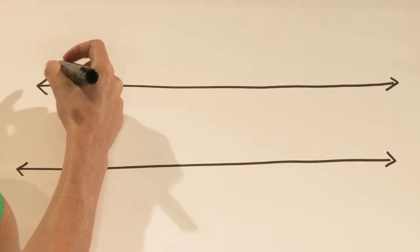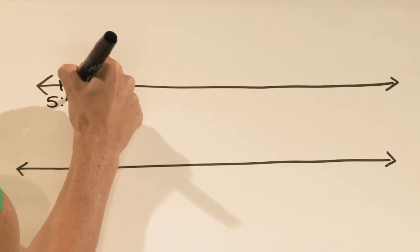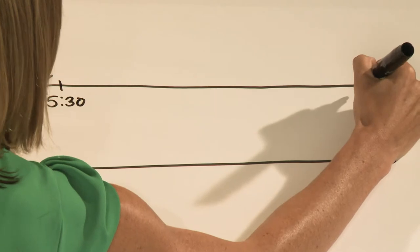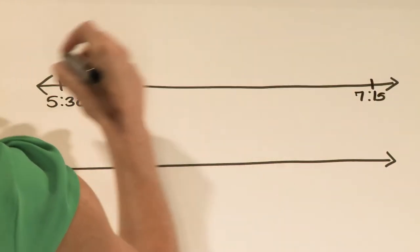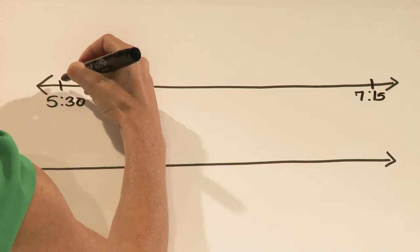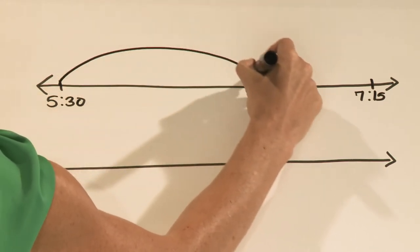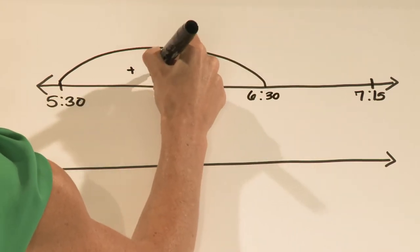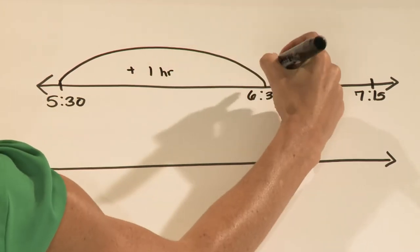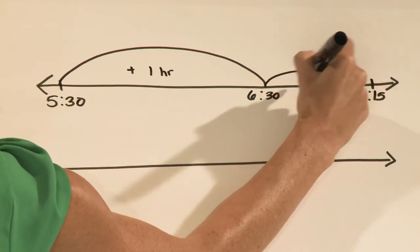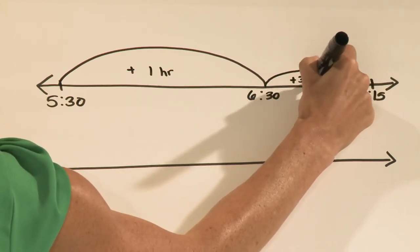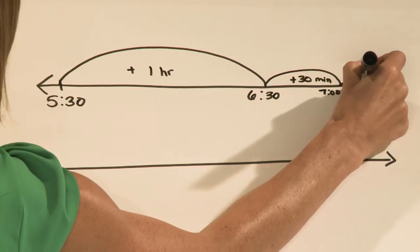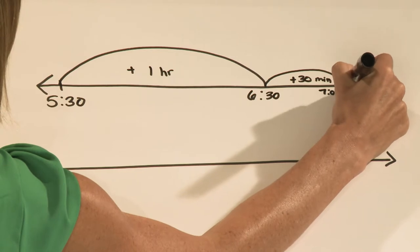One way we can show this is by starting our number line at his start time of 5:30 PM and his end time at 7:15 PM. We can jump forward to figure out the elapsed time. So I'm going to jump one hour from 5:30 PM to 6:30 PM, a half hour from 6:30 PM to 7 PM, and then 15 minutes from 7 PM to 7:15 PM.